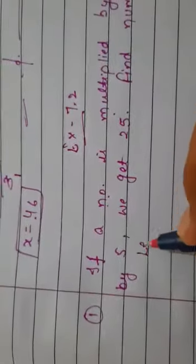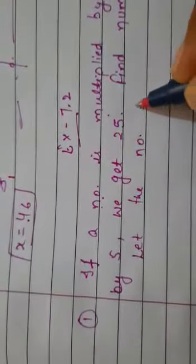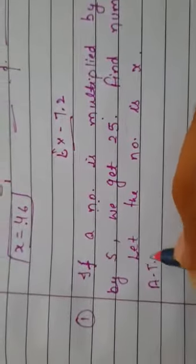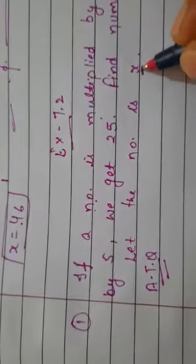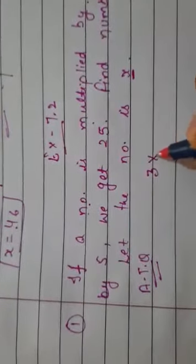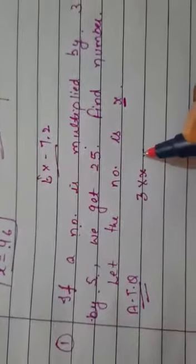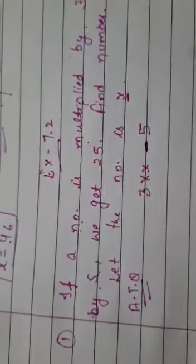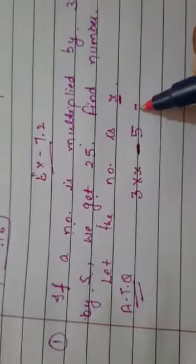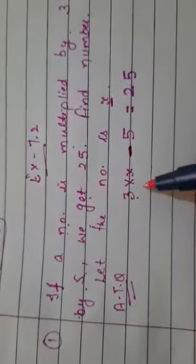According to the question: if a number is multiplied by 3, first we write 'let the number be x'. The number multiplied by 3 means 3x, and decreased by 5 means subtract 5, and 'we get' means equal to 25.